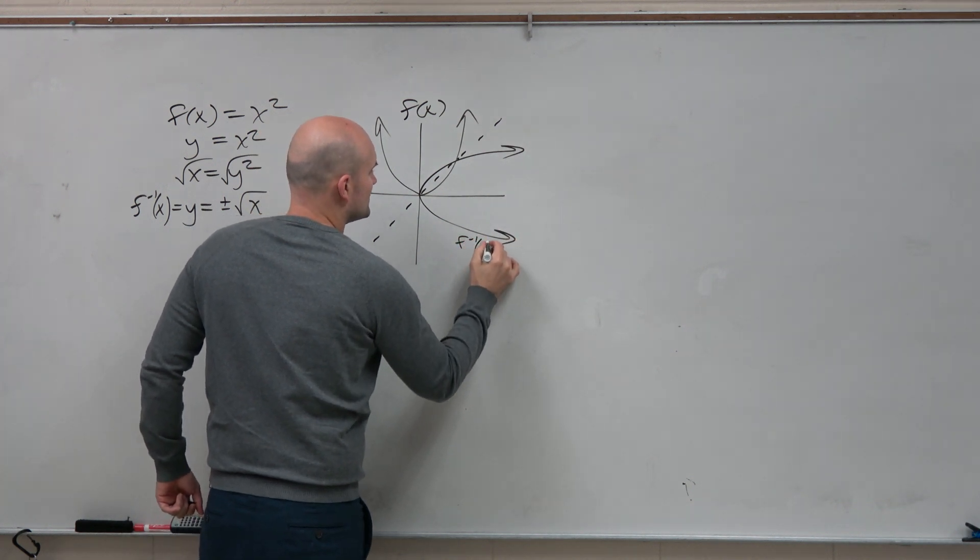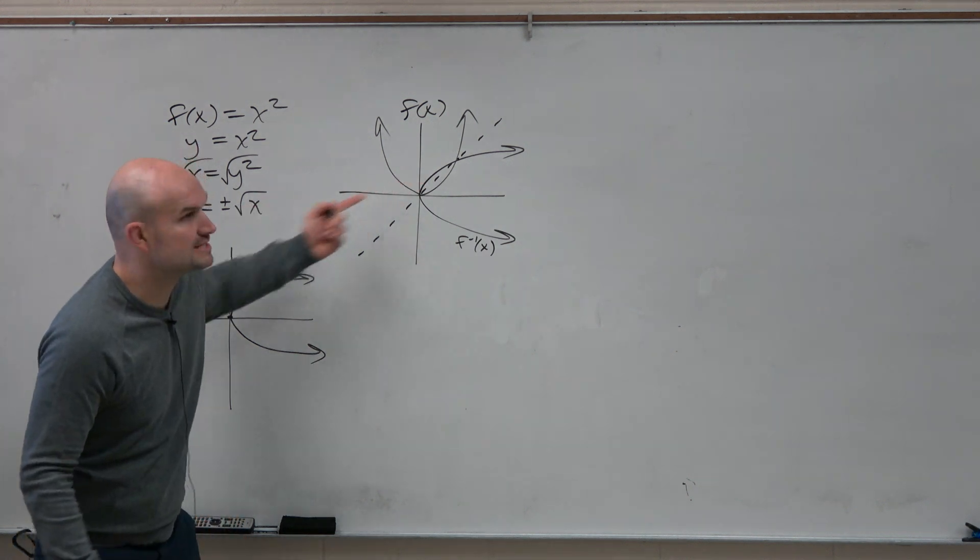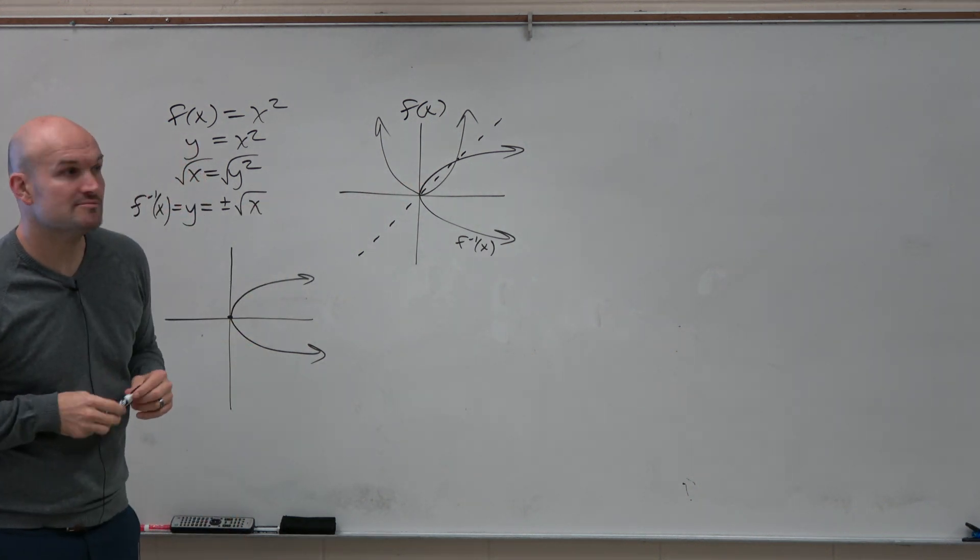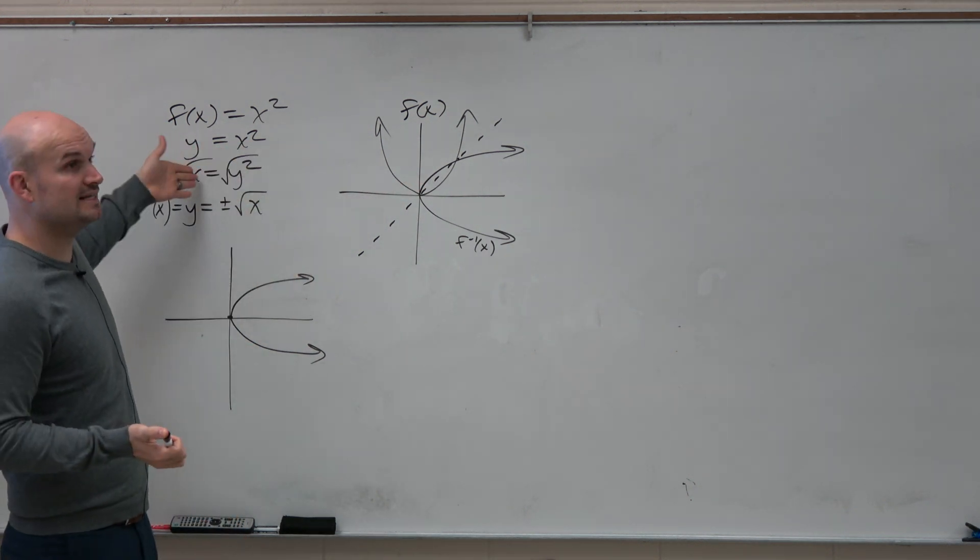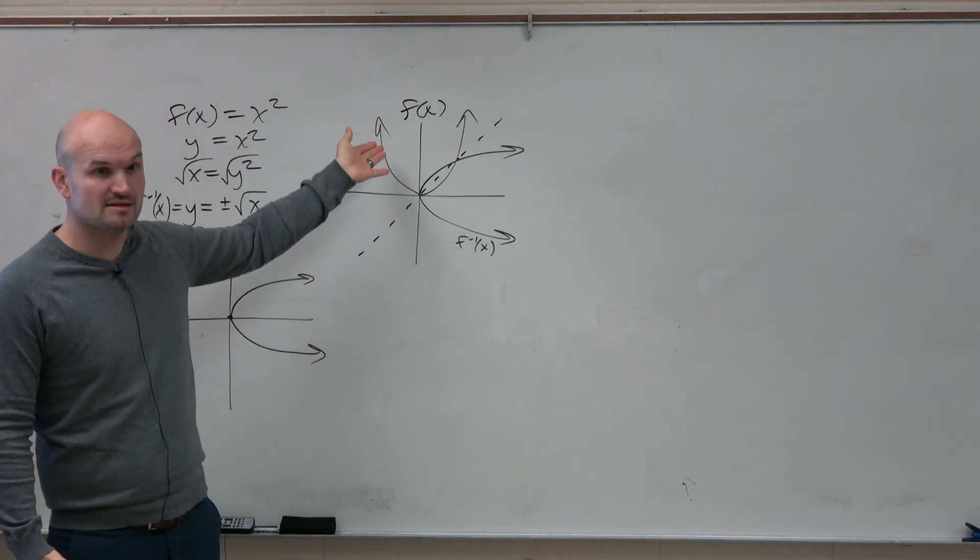We could reflect it about the y equals x line. So therefore, that'd be f inverse of x. And you could see that's basically the exact same graph. So you could have done the graphing by both ways, by finding the inverse and graphing the inverse, or by knowing what the graph of the function was and reflecting about the y equals x line.